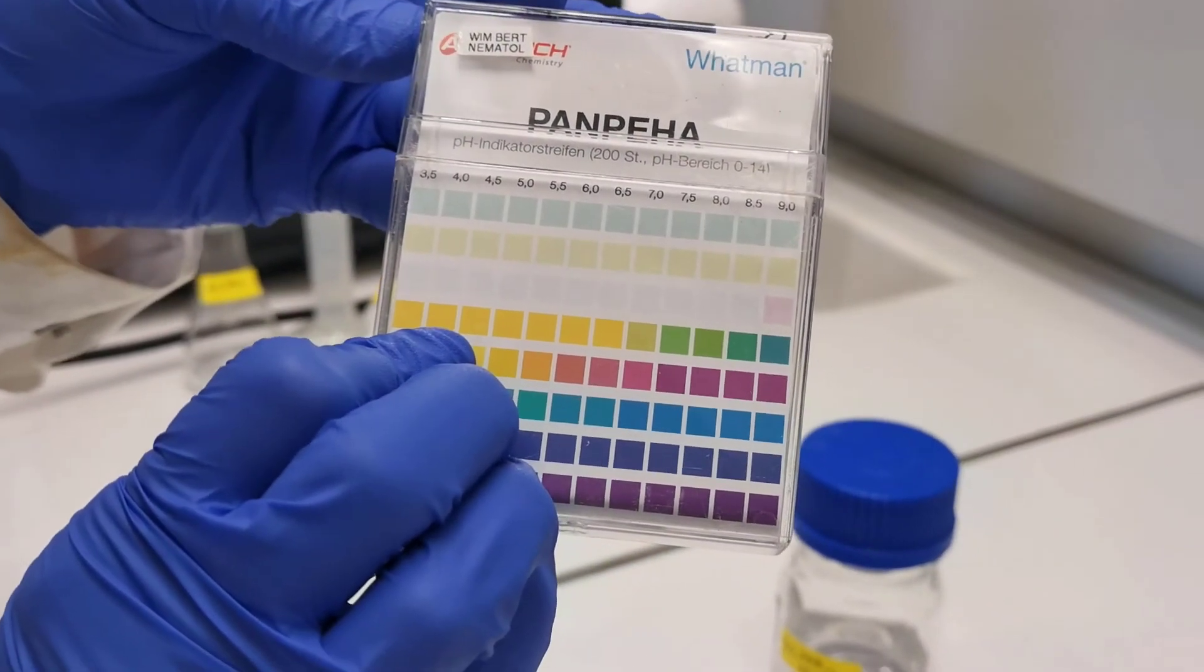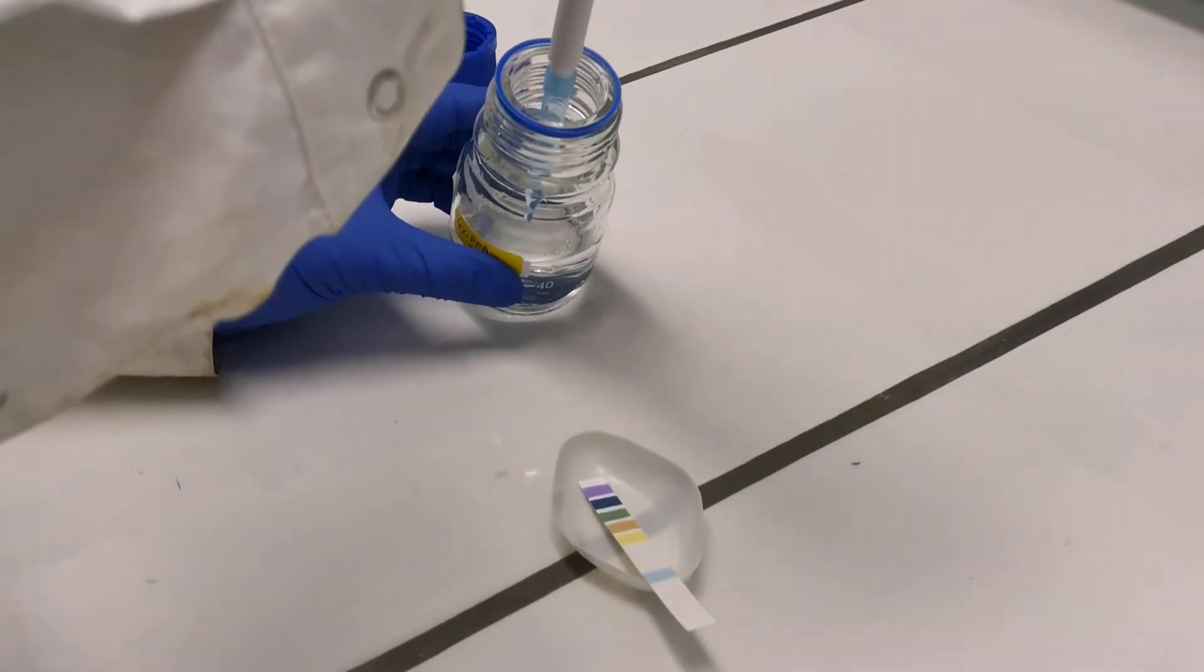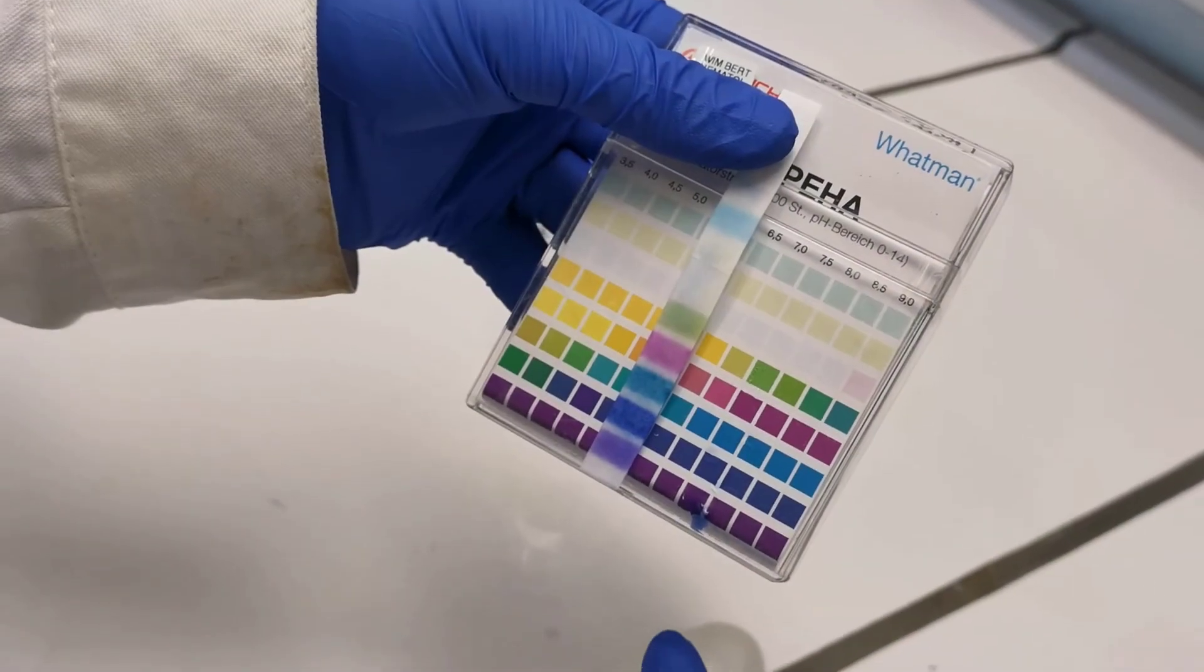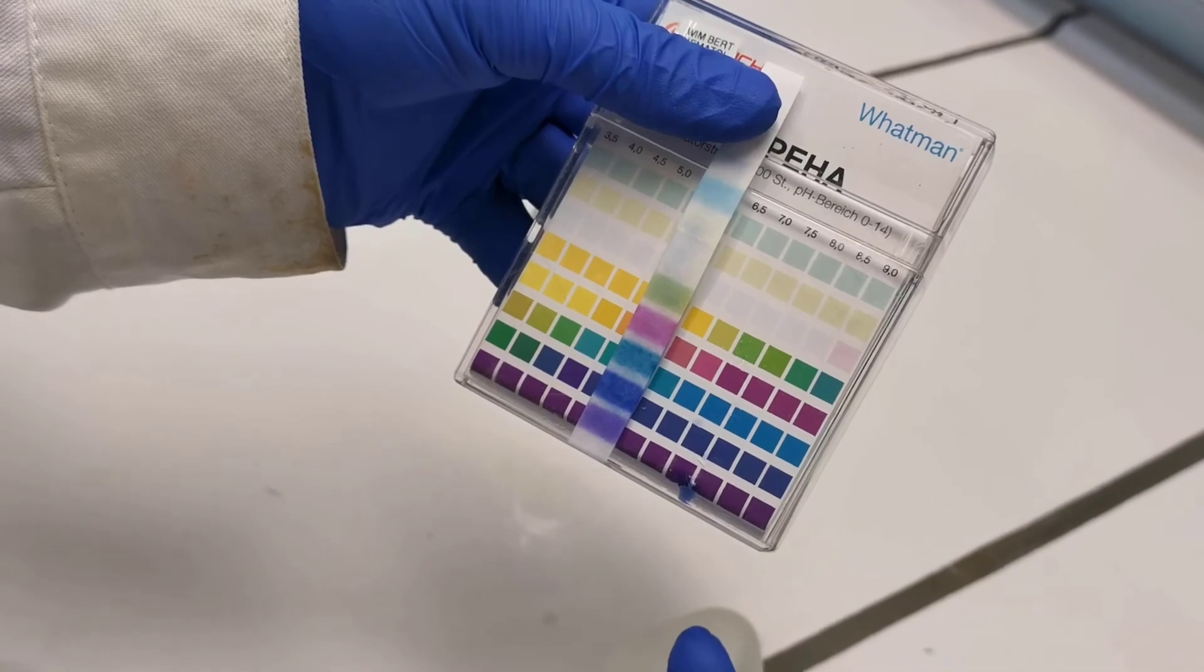The pH of the fixative should be checked at room temperature. You can use one of these pH paper. Add a few drops of the fixative on the paper and check for reference color. The pH should be ideally about 7.5.